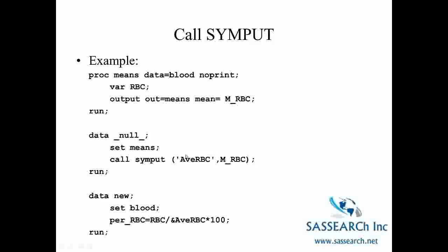The macro variable avRBC is the mean red blood cell count of the observations in the data set blood. We now have a global macro variable called avRBC that we can use in a different data step. The reason we can't use a %let statement to create this macro variable is we actually don't know the value of M_RBC — we haven't looked at any output. Call Simput allows us to transfer values between data steps without actually having looked at the output ourselves.